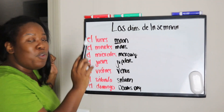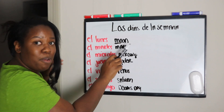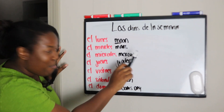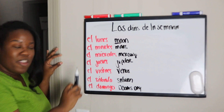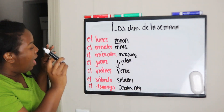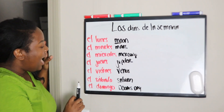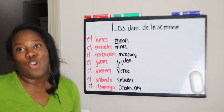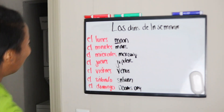Bring it back to the top. If you want to memorize: el lunes — Moon, el martes — Mars, el miércoles — Mercury, el jueves — Jupiter, el viernes — Venus, el sábado — Saturn, and el domingo — Doomsday, baby. Quit playing!